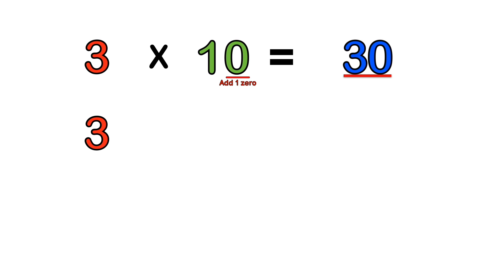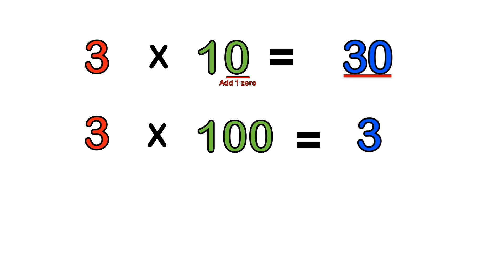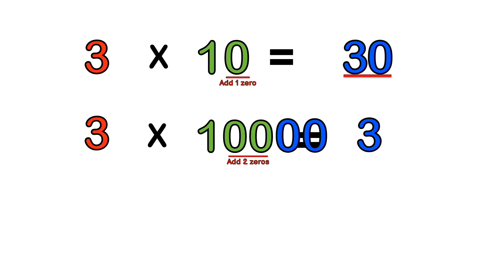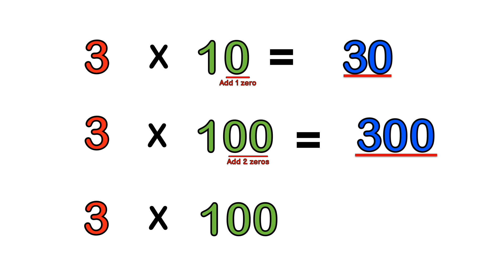How about 3 times 100? Step one: take your whole number and copy it into the answer line. Step two: count the number of zeros and add them to the end of the answer. So 3 times 100 equals 300. Likewise, 3 times 1000: copy the whole number and put it into the answer.